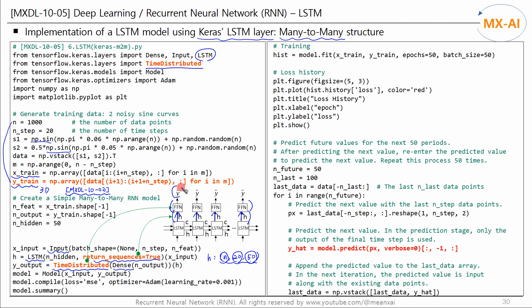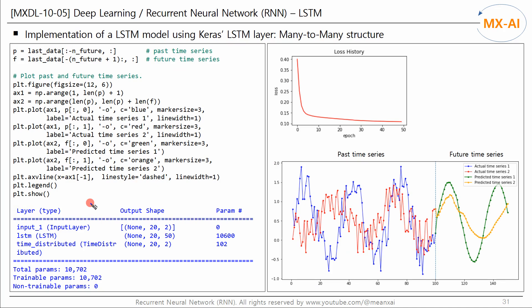This model outputs multiple Y-hats from all time steps. Therefore, when predicting the next time series value, only the final output is used. The parameters of this model are also 1,702 — the same as the many-to-one model. Only the network structure has changed. The past time series and the predicted future time series results are similar to the previous code.